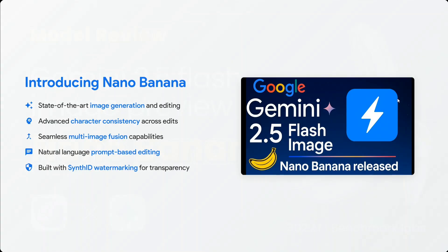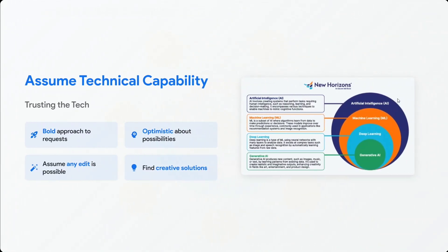Gemini 2.5 Flash is a state-of-the-art image generation and editing model. It is able to beat out all existing models, including GPT-4o's image generation model used in ChatGPT. It has advanced character consistency, seamless multi-image fusion, natural language prompt-based editing, and also adds a watermark called SynthID.